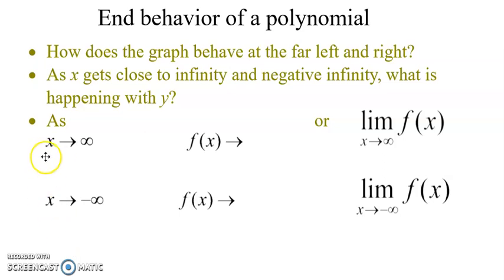As x goes to infinity, f of x goes to what? So that's how we read that. So as x goes to positive infinity, that means we go to the right forever, f of x, or our y values, are going towards what? Are they leveling off at a specific number, or are they going up to infinity or down to negative infinity?